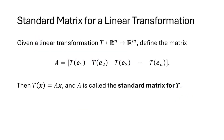This matrix whose columns are t(e1), t(e2), and so on is called the standard matrix of t — the standard matrix of the transformation t.